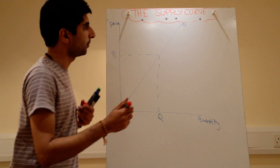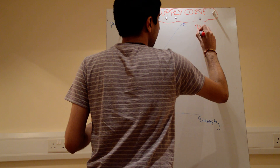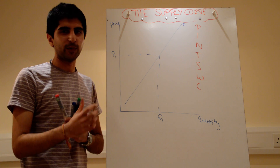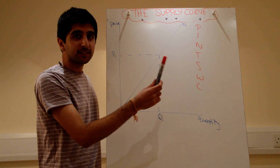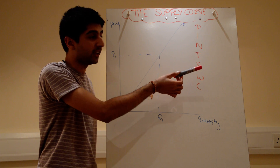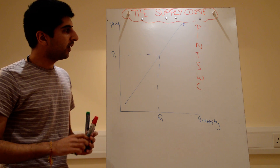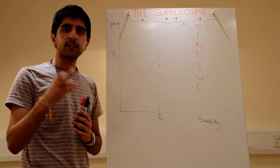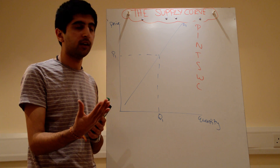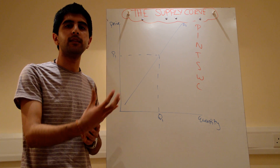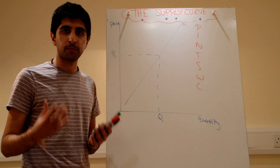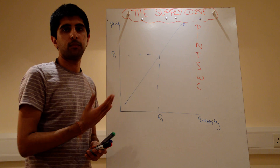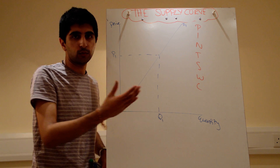Let's use a mnemonic device to help us — PINTSWC. Think: when you drink a lot of pints, you need the WC — the toilet. So: pints, WC. Think logically about what's going to affect supply: really, anything that affects the costs of production. If something becomes more expensive to produce, at the same price you'll supply less. If something becomes cheaper to produce, the costs fall and supply will increase at the same price.